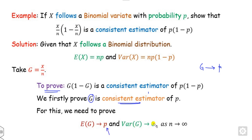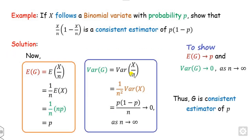To prove g is a consistent estimator of p, I need to show: the mean of g converges to p, and the variance of g converges to 0. Starting with E(g) = (1/n) · E(X) = (1/n) · np = p. Similarly, Var(g) = (1/n²) · np(1-p) = p(1-p)/n, which approaches 0 as n approaches infinity. Both properties are satisfied, therefore g is a consistent estimator of p.